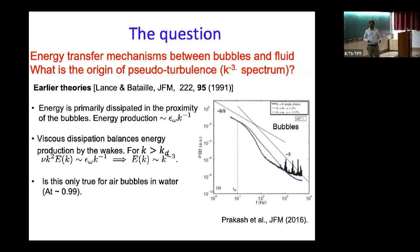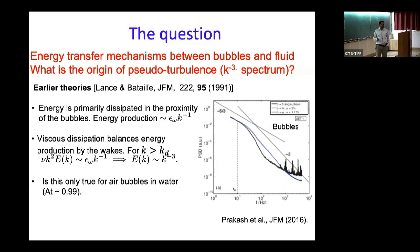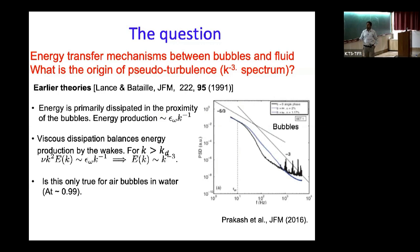For a long time the community believed this was the case. However, you might wonder: why should nonlinear transfers not be important? Is the deformability of the bubble irrelevant? Also, if you have bubbles, would the dissipation range be similar to conventional homogeneous isotropic turbulence, or something different? These were the kinds of questions we were looking at. Even in experiments, the Galilei numbers were around 300 to 400.